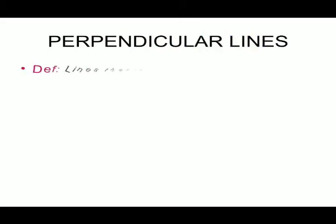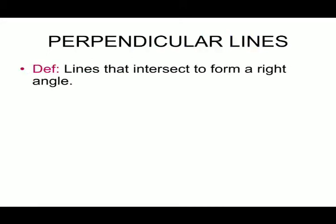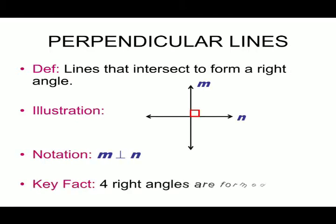Now, perpendicular lines. Definition: lines that intersect to form a right angle. Here you can see line M and line L intersecting at one point and making a right angle. The notation is written as M perpendicular to N.